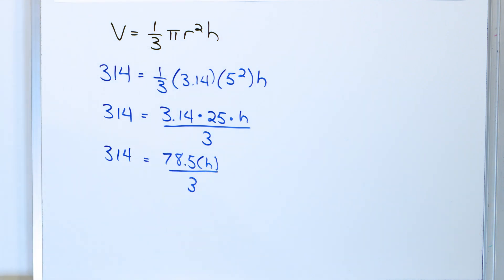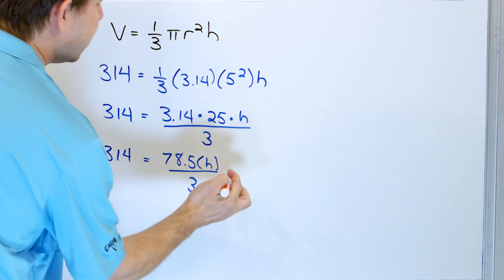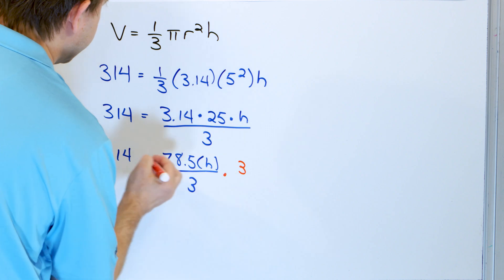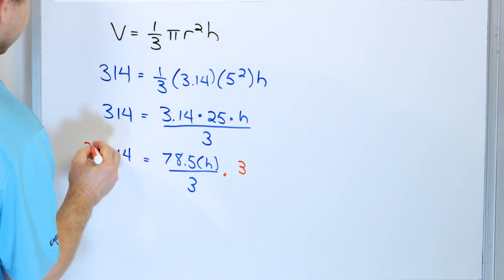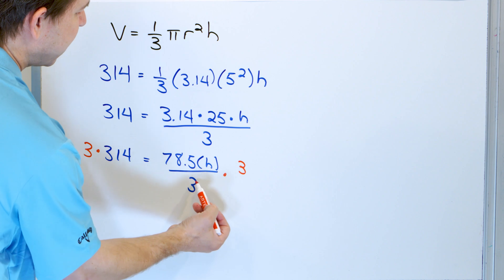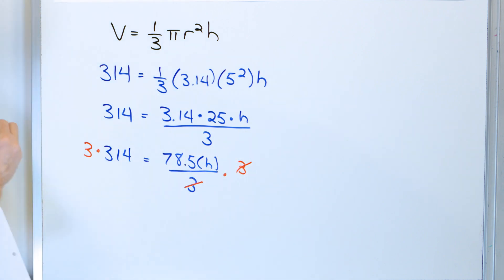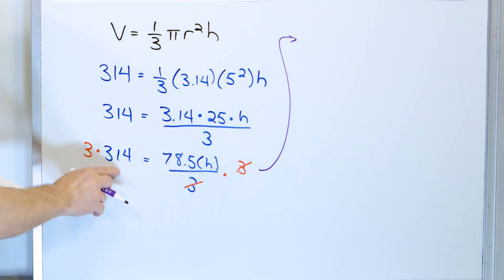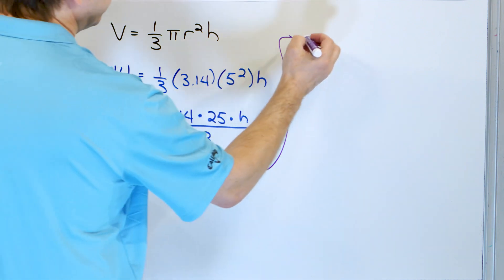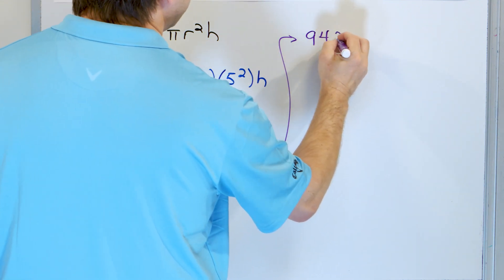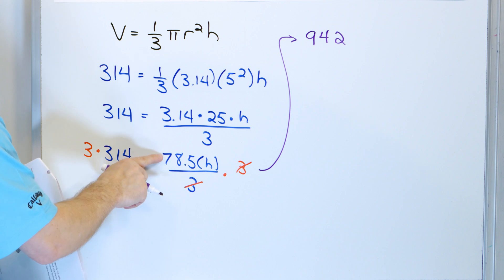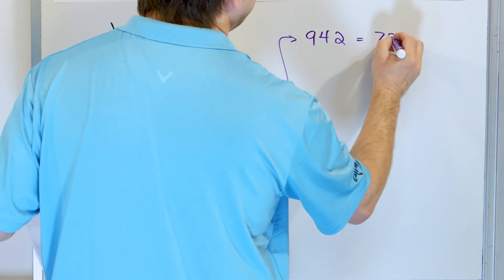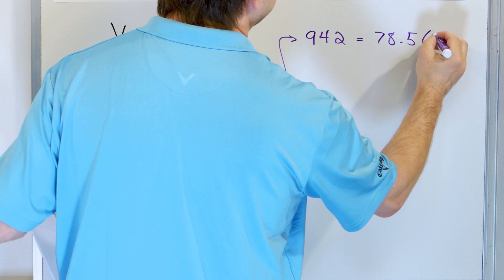Now, how do we make progress? I need to get rid of this 3. So what I'm going to do is multiply the right-hand side by 3, and then I'm going to multiply the left-hand side by 3 as well. I'm doing that because I have a 3 on top and on the bottom, so they cancel. On the left-hand side, 3 times 314 is 942. On the right-hand side, since the 3s are gone, we just have 78.5 times h.